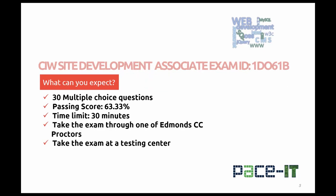The CIW exam, and what you can expect when you go in to take the competency, is a 30-minute multiple choice exam. The passing score is 63.9 percent. There is a 30-minute timeline, and you can take the exam through one of Edmonds Community College proctors. If you're not close enough to Edmonds Community College, you can take the exam at a Prometric or Pearson VUE testing center.